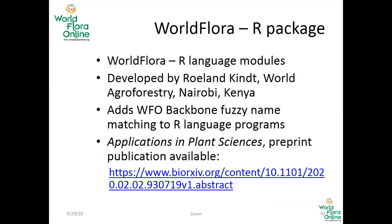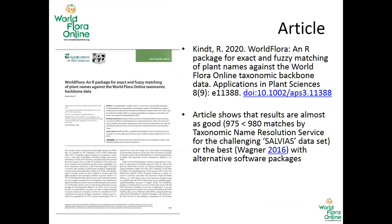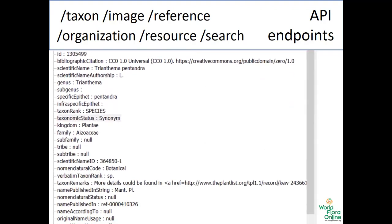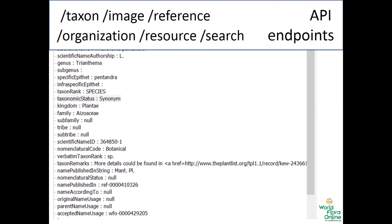For example, this WFO R package allows name matching using data from World Flora Online. Here's the article in the Publix Transfer. Finally, we are in the process of publicizing the API endpoints inherited from E-Monocot to the WFO portal, which allows users to retrieve content directly through programming from the portal.